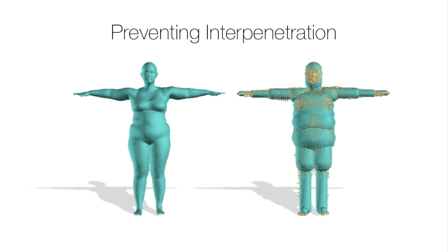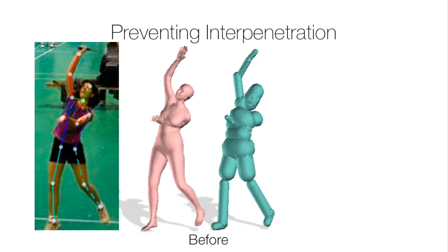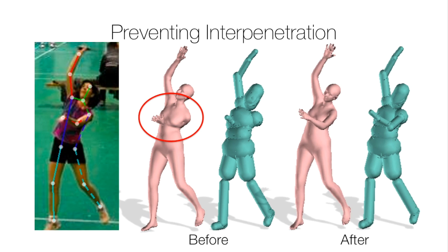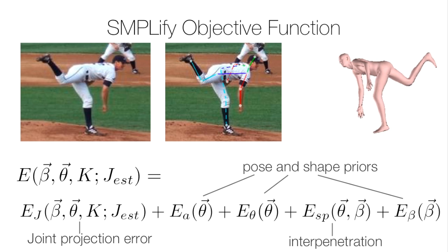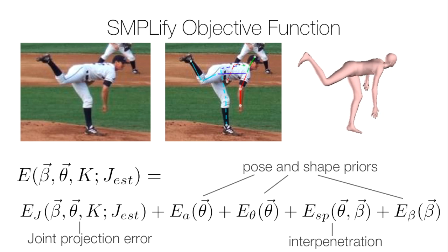Another advantage of working with complete surfaces, instead of skeletons, is that we can reason about interpenetration. We do so by approximating the surface with capsules, and penalise intersections between them. Here is a result without the interpenetration term, where there is a gross intersection of the left arm and the body. Adding the interpenetration term resolves this problem and makes the results qualitatively natural.